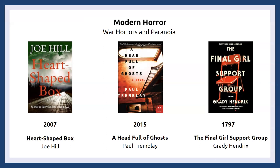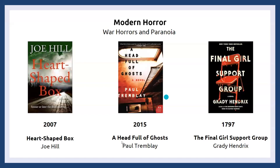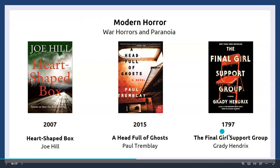In modern horror, we start to see authors like Joe Hill — Stephen King's son, who took Hill as his last name to make a name for himself without King. Stephen King also has another son named Owen who is also a writer. More recent notable releases include A Head Full of Ghosts by Paul Tremblay and really anything by Grady Hendrix, including The Final Girl Support Group. I won't show too many current titles here because we'll have plenty to see in the subgenre section.